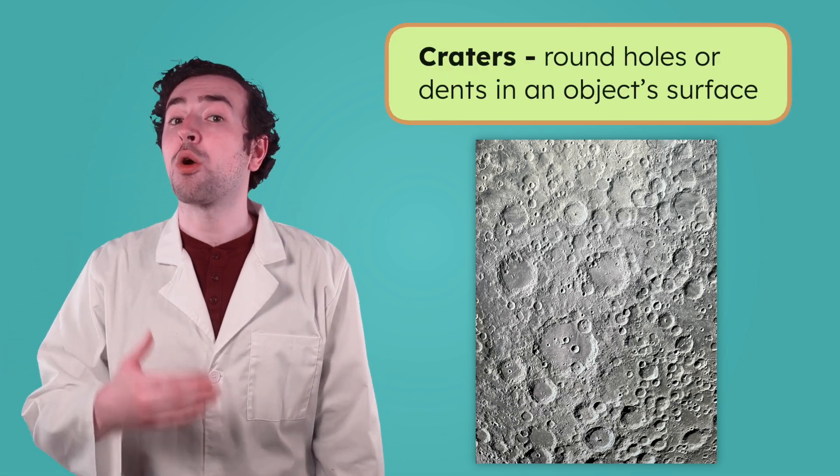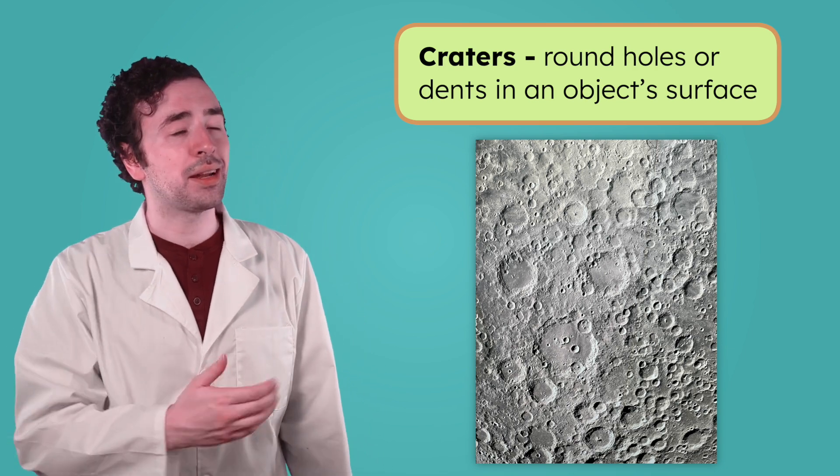But space rocks didn't just break up the surface of the moon, they also left behind something else. Look at all the round holes. These are called craters.